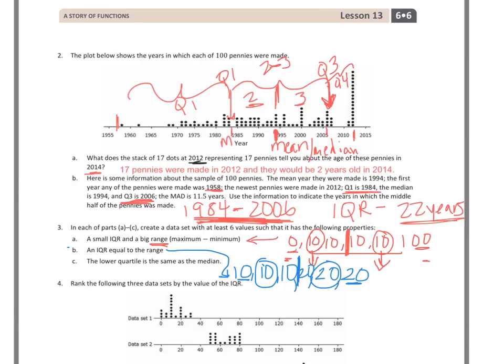For part C — where the lower quartile is the same as the median — I'll leave that one to you. A hint: make the lower half of your data a similar or same number compared to the last two or three values from the upper part of your data.